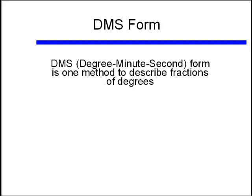DMS form, or degree minute second form, is one method that people use to describe fractions of degrees. You might see this reading a map with latitude and longitude, and you might use this if you are a surveyor.